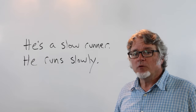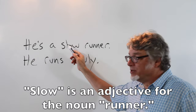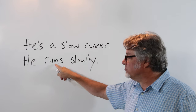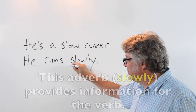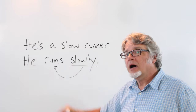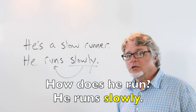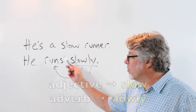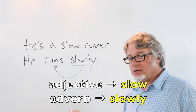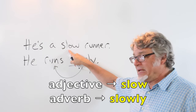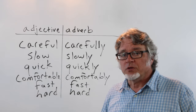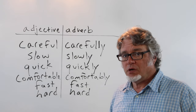He's a slow runner — here 'slow' is an adjective for the noun 'runner.' In the sentence 'he runs slowly,' the adverb provides information for the verb: how does he run? He runs slowly. It's useful to compare adjectives and adverbs when you study adverbs.